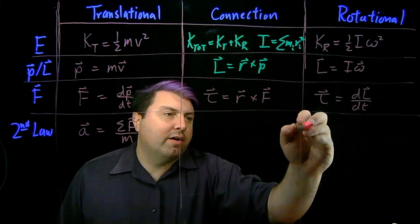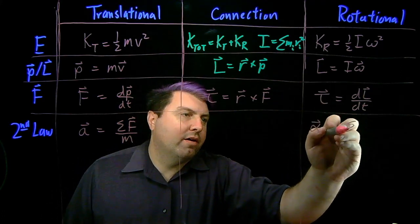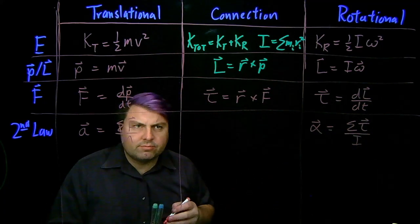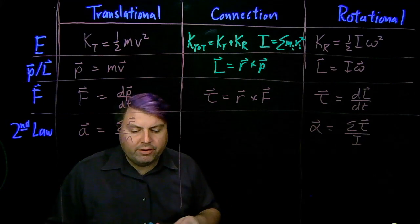In rotational, we have that our angular acceleration alpha is the sum of the torques over the moment of inertia. Well, how do we relate these things?